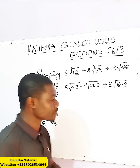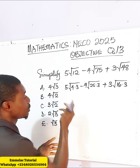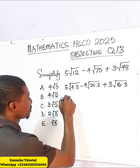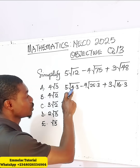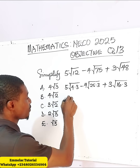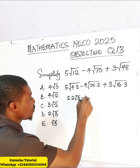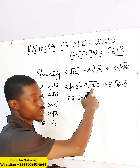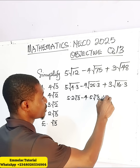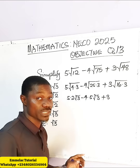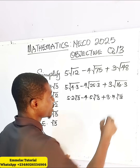Now we simplify each term. The square root of 4 is 2, so we have 5 times 2 times √3. The square root of 25 is 5, so minus 4 times 5 times √3. The square root of 16 is 4, so plus 3 times 4 times √3.